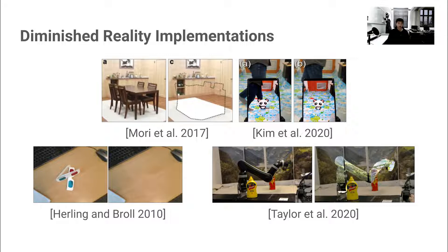As you can see here, prior diminished reality implementations typically involve recovering the occluded background of a target object. In other words, we can think of diminished reality as adjusting an object's opacity and setting it as transparent.